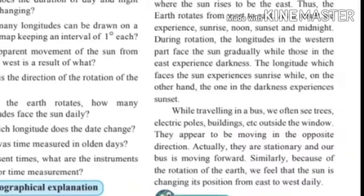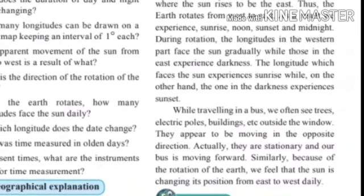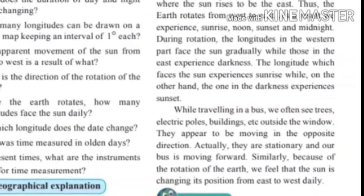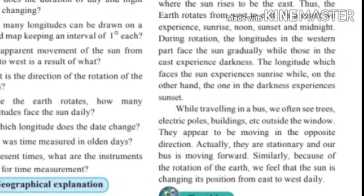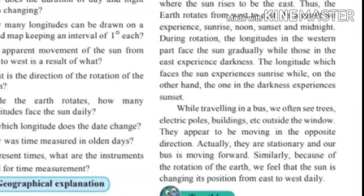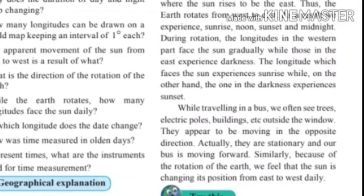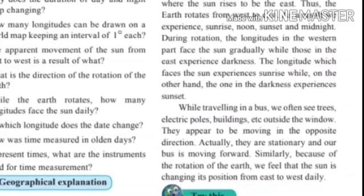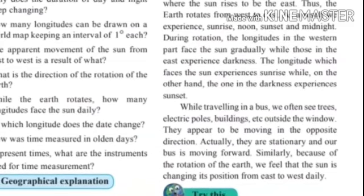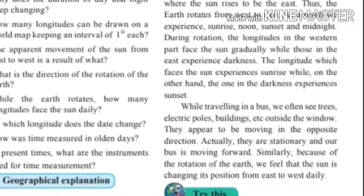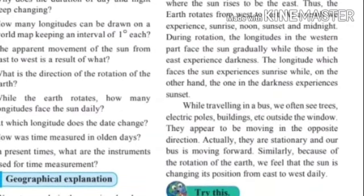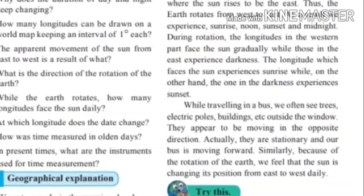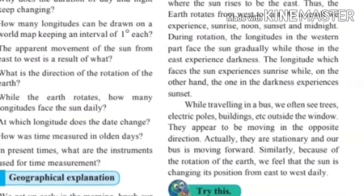While traveling in a bus, we often see trees, electric poles, buildings, etc. outside the window — they appear to be moving in the opposite direction. Actually, they are stationary and our bus is moving forward. Similarly, because of the rotation of the earth, we feel that the sun is changing its position from east to west daily.